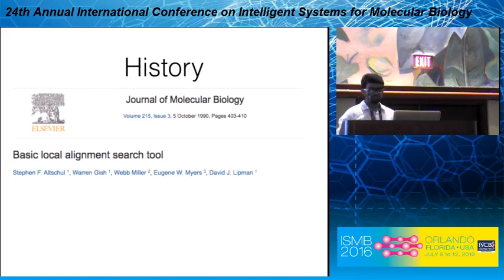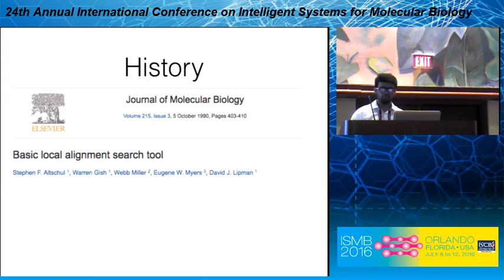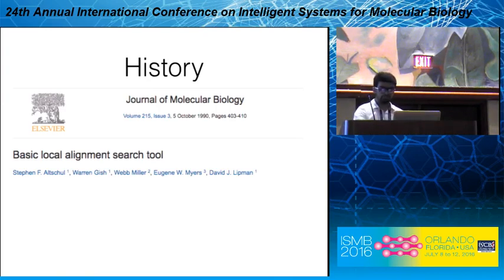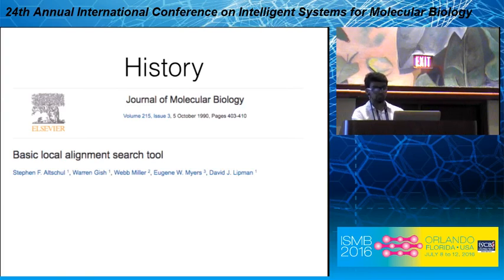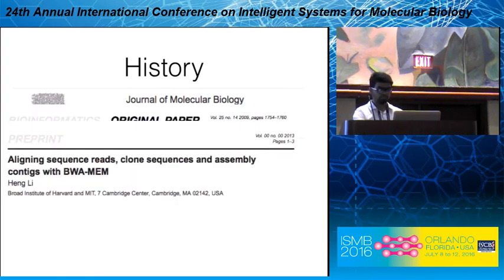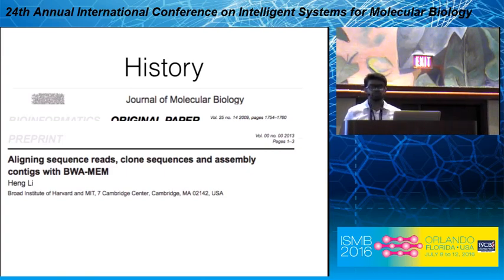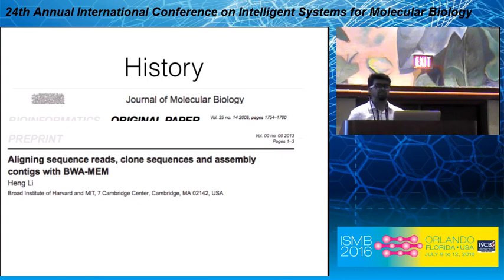The problem of read alignment is very well studied and the roots go back to the Smith-Waterman algorithm. I'd like to add a disclaimer here: the problem has been very well studied and there are a plethora of tools available — brilliant work like BLAST by Myers and his group, tools by Heng Li like HISAT, BWA, and BWA-MEM, a tool by Ben Langmead and his group called Bowtie and Bowtie 2, and they just keep on coming.